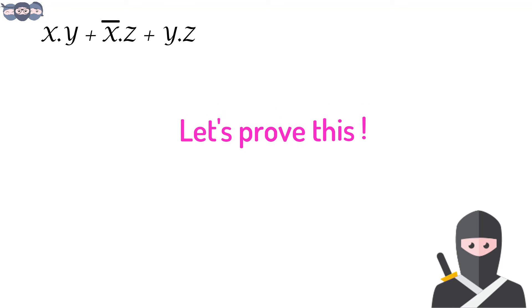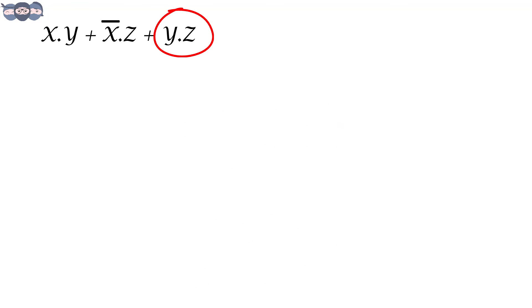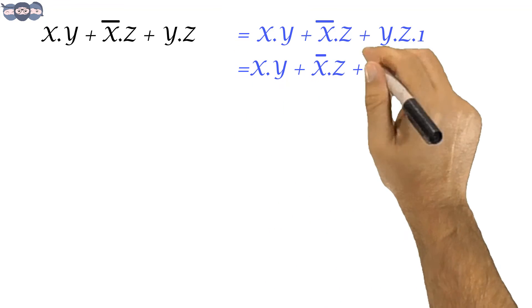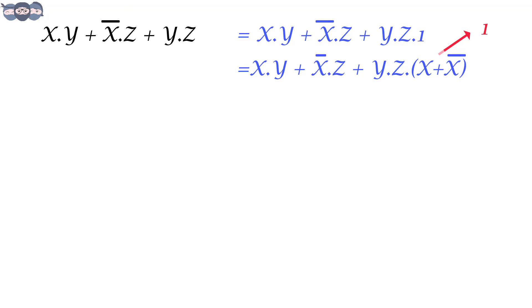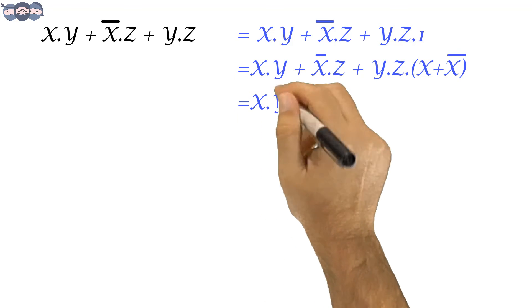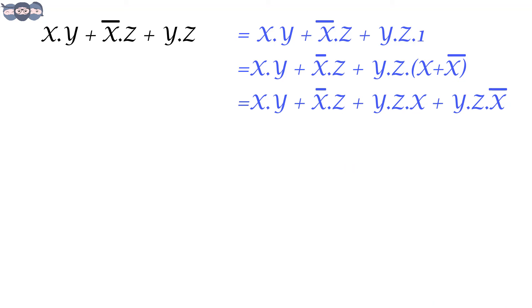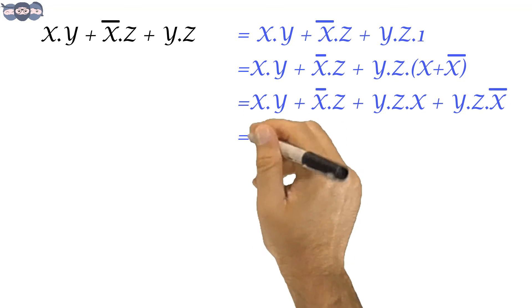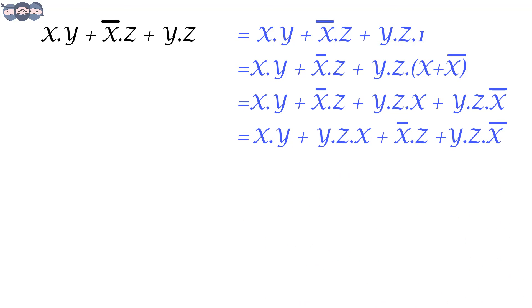Let's prove this. Here the last term is Y and Z. We can also say it's Y and Z and 1, as it would mean the same. This 1 can be replaced with X or X bar, since this term equals to 1, so it won't change the output. We will expand the last term. We find that some of the literals are common in certain terms. Let's rearrange the terms. This is the final expression. It is called the consensus law.